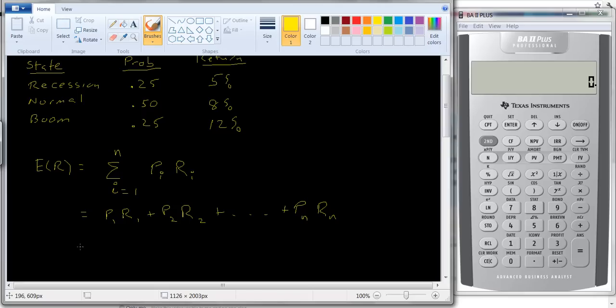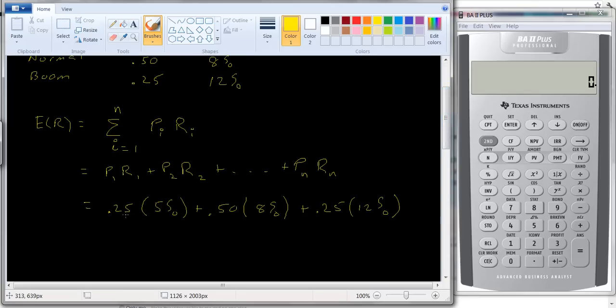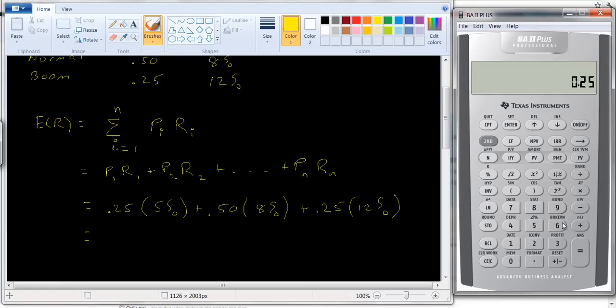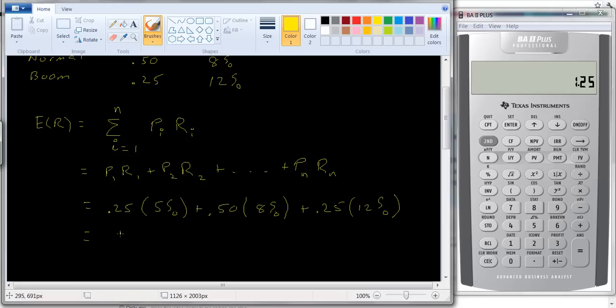From our example, we would get the following: 0.25 times 5% plus 0.50 times 8% plus 0.25 times 12%. And we can just work that out.